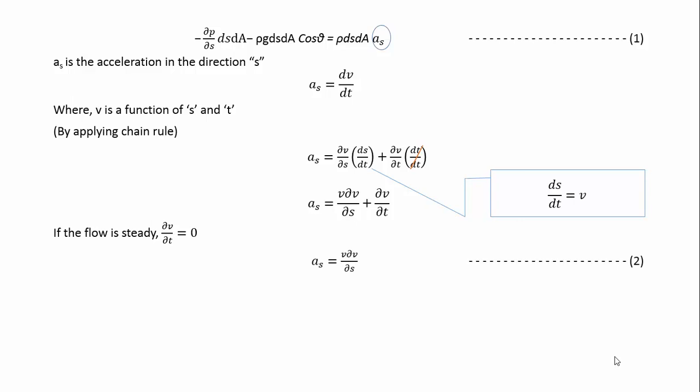Now substitute the acceleration expression in equation 1. Now this equation can be written as follows. Divide both sides by density. Take all the terms to the left side.